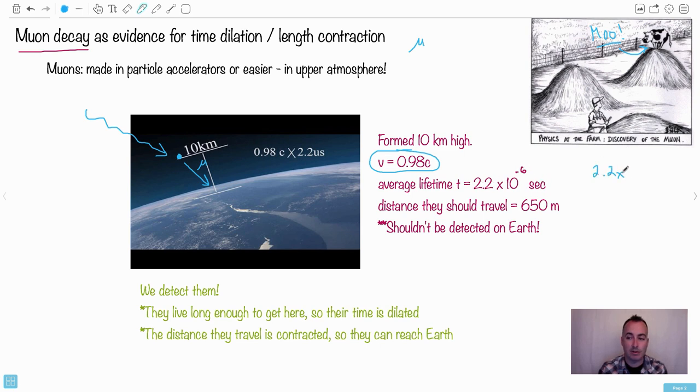the average lifetime of a muon is only 2.2 times 10 to the minus 6 seconds. In other words, I should say 2.2 microseconds. Remember, that's what mu is - mu is actually micro, it's 10 to the minus 6. So 10 to the minus 6 is a microsecond. So these things are very short-lived.